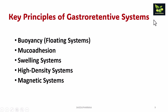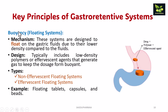The key principles of gastro-retentive systems are: buoyancy or floating systems, mucoadhesion, swelling or expandable systems, high density systems, and magnetic systems. The first principle is the buoyancy or floating system, where these systems are designed to float on gastric fluids due to their lower density compared to the fluids. The system contains drug plus polymer plus effervescent agent. They include low density polymers or effervescent agents that generate gas to keep the dosage form floating. They are of two types: non-effervescent and effervescent floating systems. Examples include floating tablets, capsules, and beads.